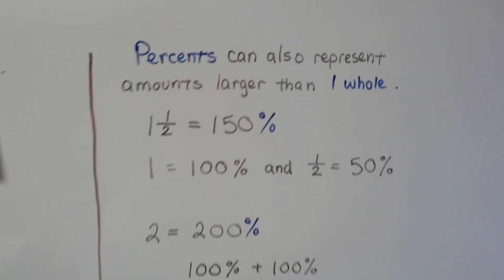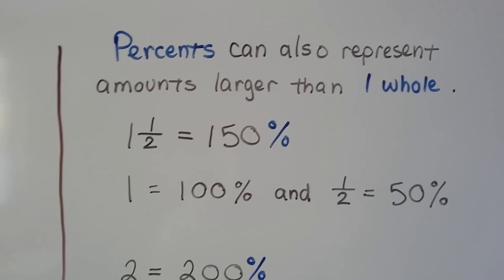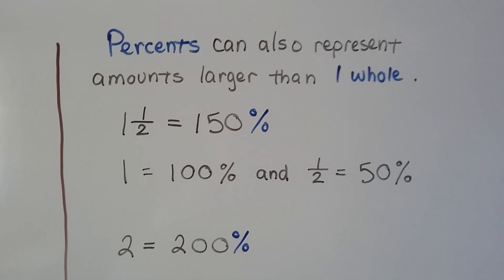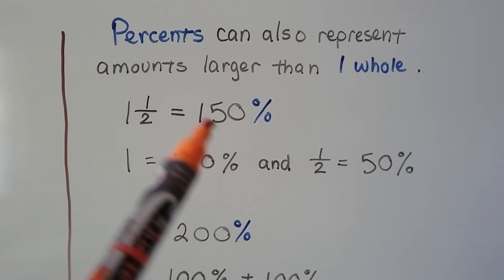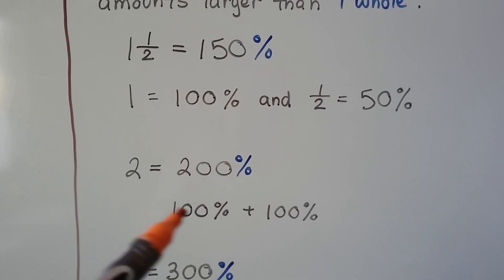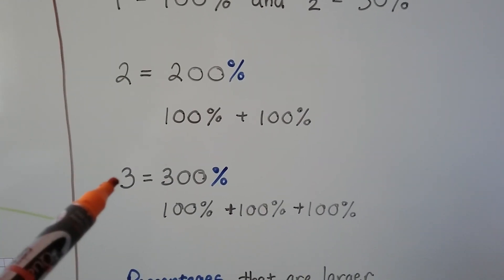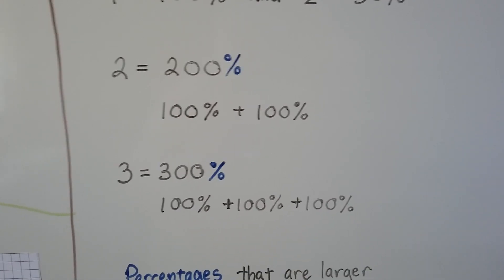So percents can also represent amounts larger than one whole. If 100% is 1, we could say one and a half is 150%. That would be the 100% for the 1 and 50% for the half. If we have two whole, we could say it's 200%, a 100% plus a 100%. If we have three whole, we can say it's 100% plus 100% plus 100%, 300%.